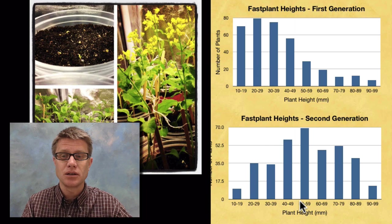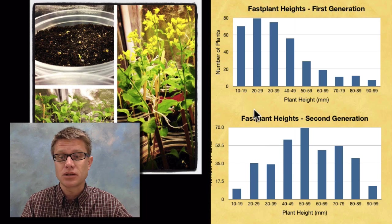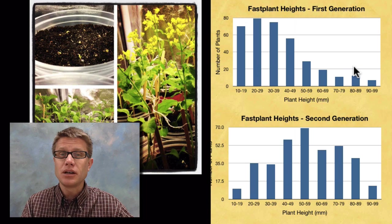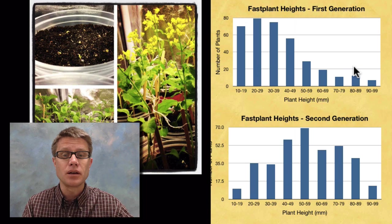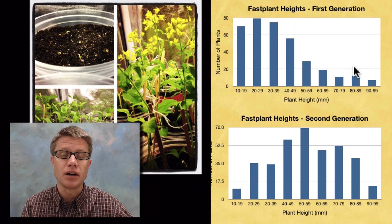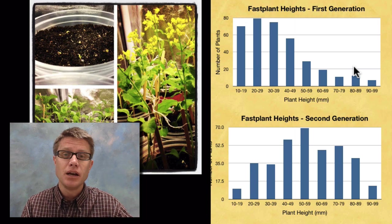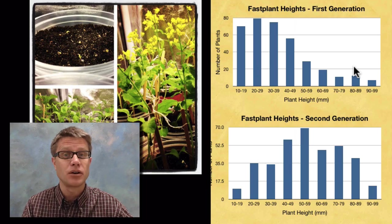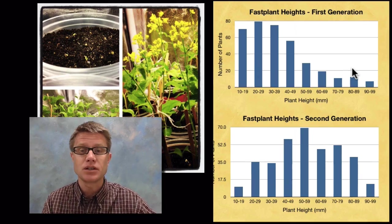What kind of selection is this? This is directional selection. We're pushing this bell-shaped curve to the right. You didn't have to measure height. Another one that a lot of teachers will do is trichomes, those are little hairs that are found on the fast plant. You can breed the hairier plants and you're going to have a hairier population. So that's investigation one.